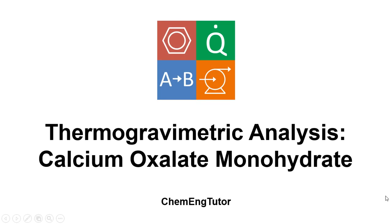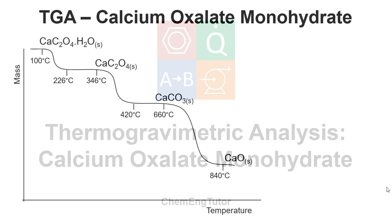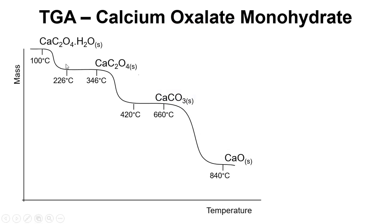In this video we're going to look at the thermal decomposition of calcium oxalate monohydrate. Here's the thermal trace — this is a very well characterised and well understood material for thermal decomposition. Starting with calcium oxalate monohydrate, as we heat up it loses water, then loses carbon monoxide to turn into the carbonate, and then finally loses CO₂ to turn into the oxide.